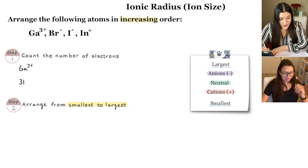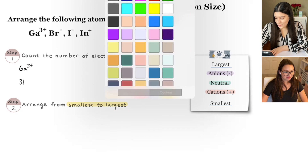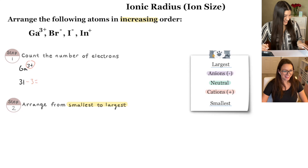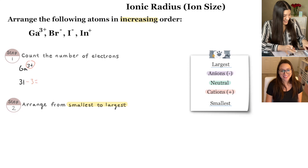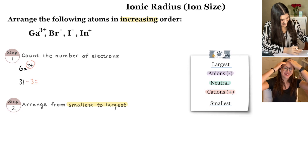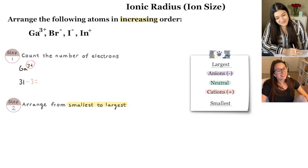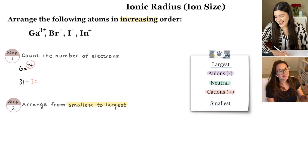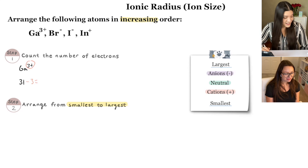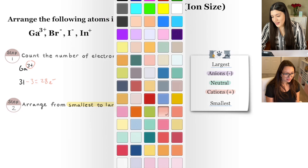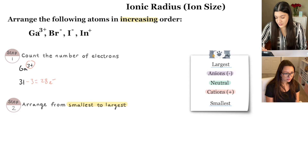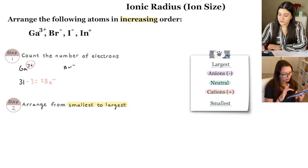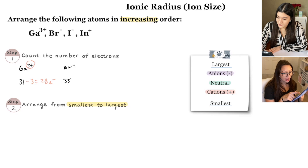Gallium has a 3⁺ charge, so we subtract 3 from 31, giving 28 electrons. For bromine with a 1⁻ charge: 35 plus 1 is 36 electrons. For iodine with a 1⁻ charge: 53 plus 1 is 54 electrons. For indium with a 1⁺ charge: 49 minus 1 is 48 electrons. All different electron counts — that's a good sign.